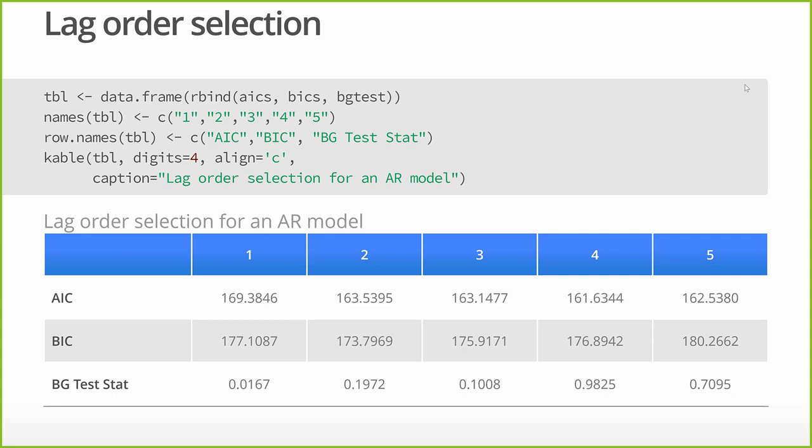And I get this table. And so all of that stuff is just displaying what's here. And so if I use AIC, I want to minimize AIC, and I see big, smaller, smaller, small, bigger. So AIC wants four lags.